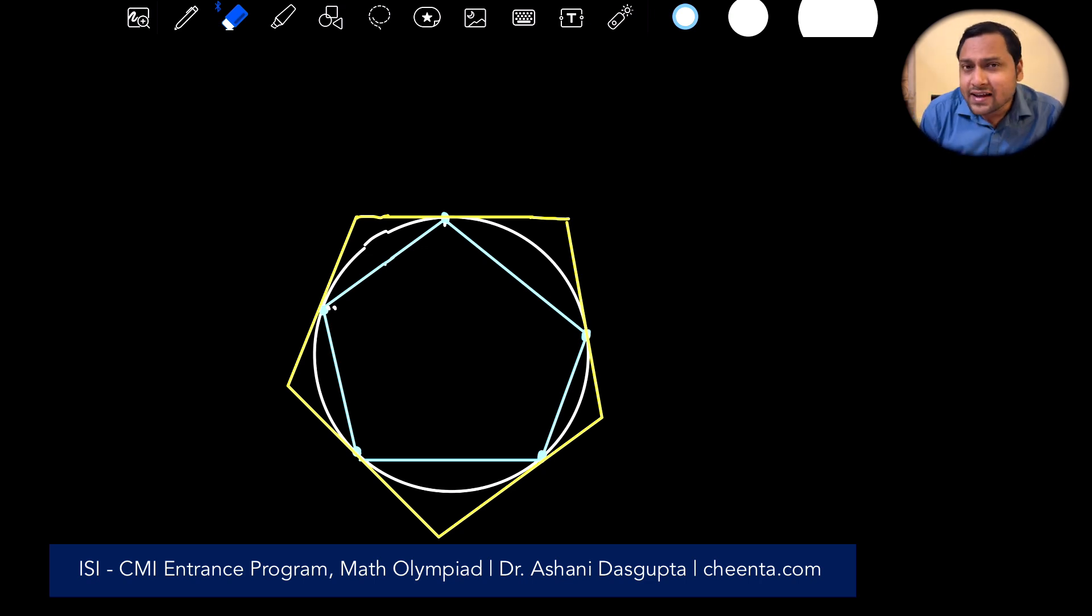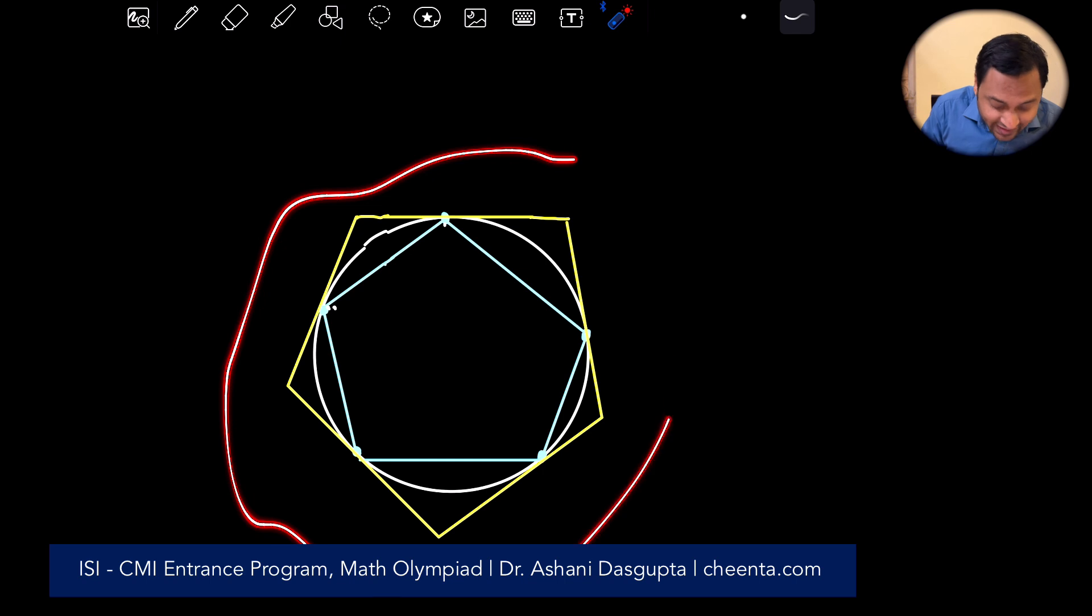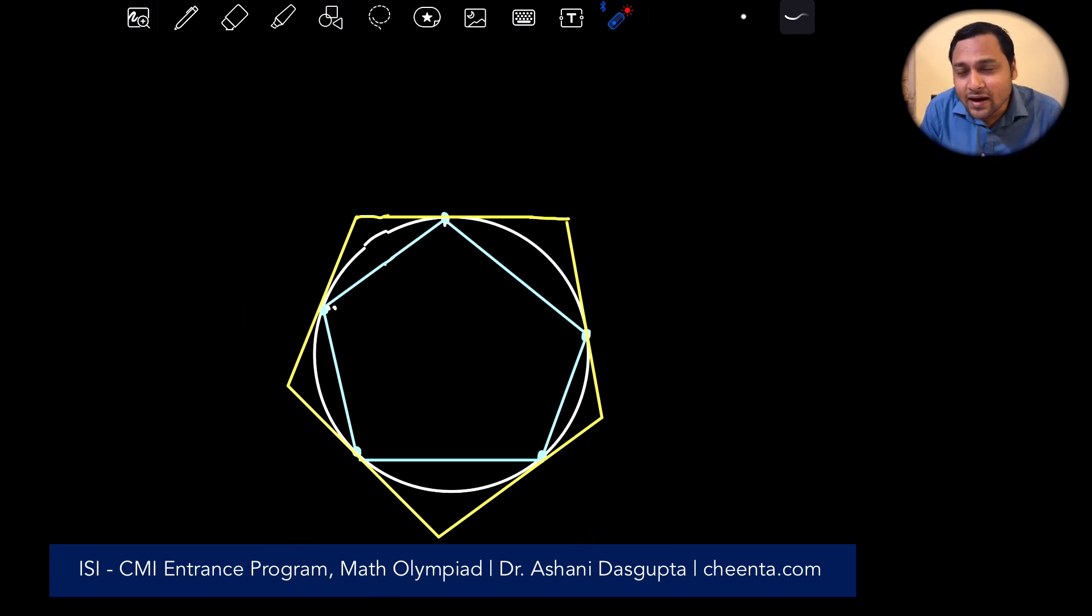There are two things that we will learn using this particular problem: how to use trigonometry to approach area problems and an associated concept of Archimedean limits. So these are the two things that we will learn. Let's start.